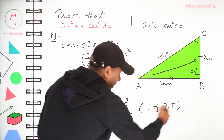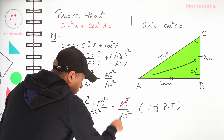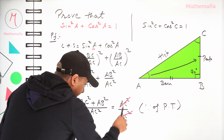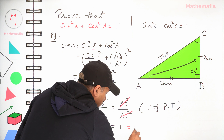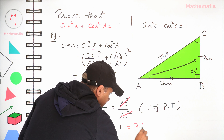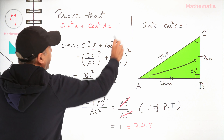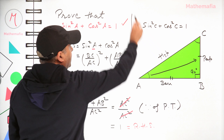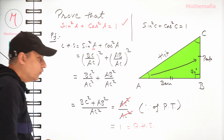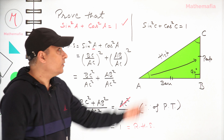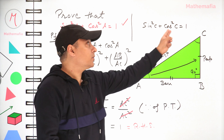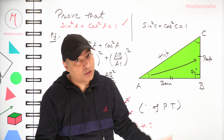These cancel out and this equals 1, which is equal to the right-hand side — and that's what we had to prove. On the same lines we can also prove that sin²c + cos²c = 1, so it is indeed a generic result.